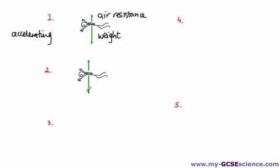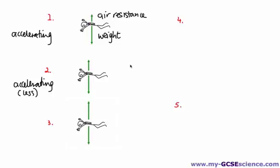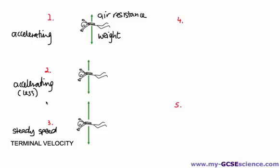The weight is still larger so the person is still accelerating, but accelerating a little bit less — they are getting faster, but not as much as previously. After a while, the air resistance becomes equal to the downward force of weight, and the person reaches a steady speed. It's this steady speed of a person falling after the forces have become balanced that we refer to as terminal velocity. So terminal velocity is when an object or person is falling and the air resistance and weight become balanced, causing the person to fall at a steady speed.